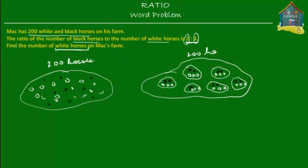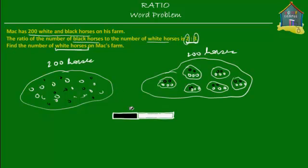These are still 200 horses. Now if I were to make a model diagram, I would have a group with 2 black horses, and for every 2 black horses there are 3 white horses. So I make this group of 2 black horses and 3 white horses. In the group there are 5 horses, and on the whole farm there are 200 horses.